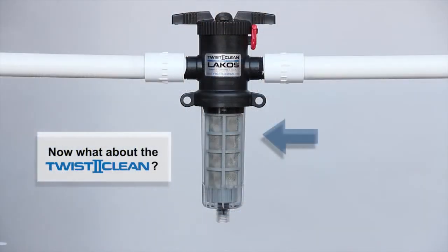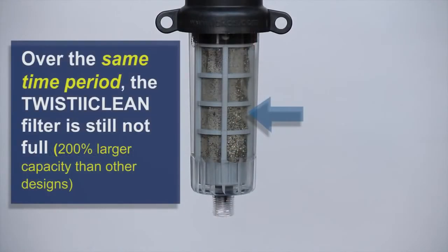Now let's take a look at the LACOS Twist II Clean filter. The first thing you notice is the vastly larger screen area of the filter screen itself. This means that given the same amount of sand, sediment, and other debris, the Twist II Clean is much less likely to clog.